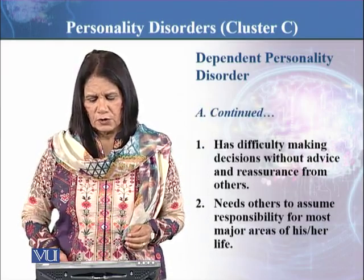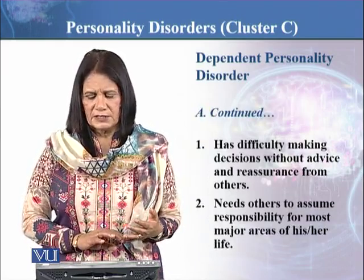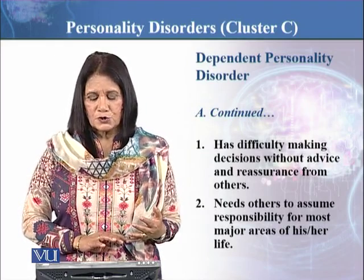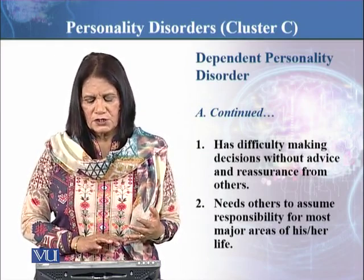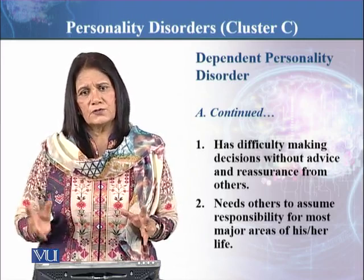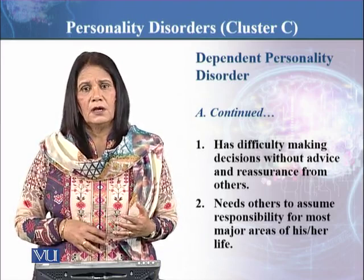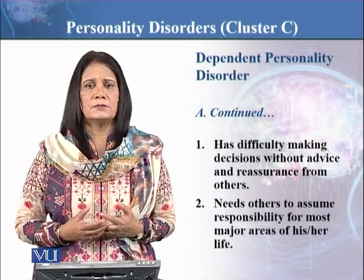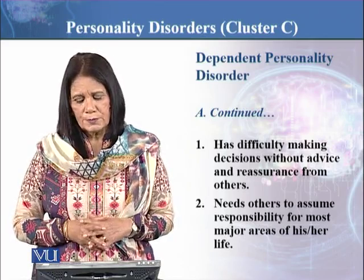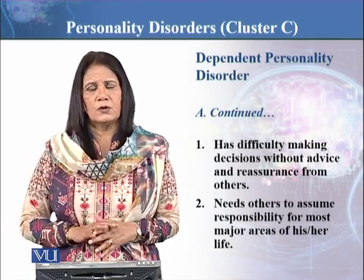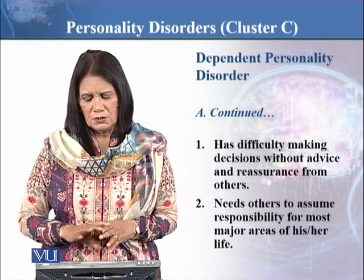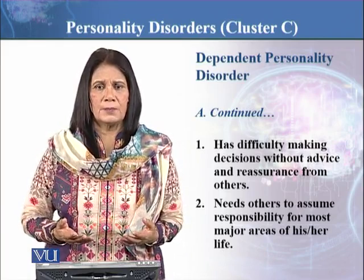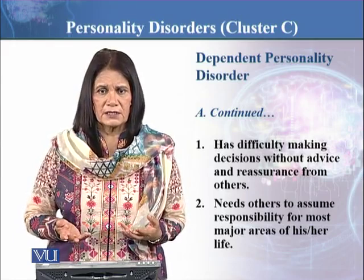Symptom number one: has difficulty making decisions without advice and reassurance from others. Symptom number two: needs others to assume responsibility for most major areas of his or her life — for example, job choice, life partner یا شادی کا decision، یا چھوٹے چھوٹے decisions جیسے shopping بھی وہی کر رہے ہوں۔ You become so much dependent on them کہ آپ کا اپنے اوپر اعتماد نہیں رہتا اور آپ کچھ بھی نہیں کر سکتے.